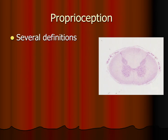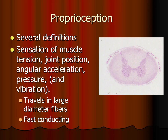The sensation we need to make these adjustments and carry forth these reflexes is called proprioception. It has several definitions, but the broad definition used here includes sensation of muscle tension, joint position, angular acceleration, and pressure and vibration. It travels on large diameter, fast conducting nerve fibers, because if we are about to fall over, the central nervous system has to get that information to the muscles quickly. On the other hand, a toothache — which travels on slow conducting C fibers — is information we can live without knowing about for a minute.